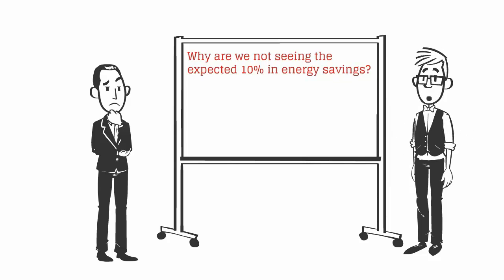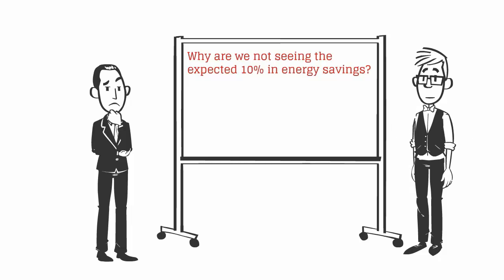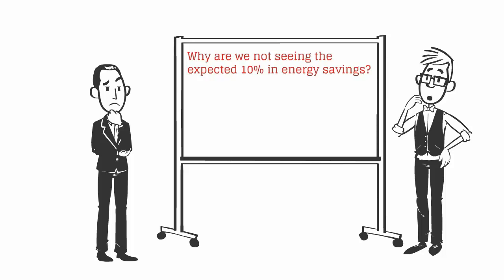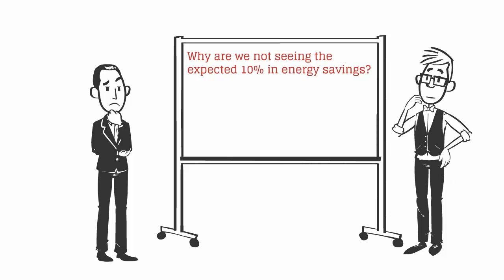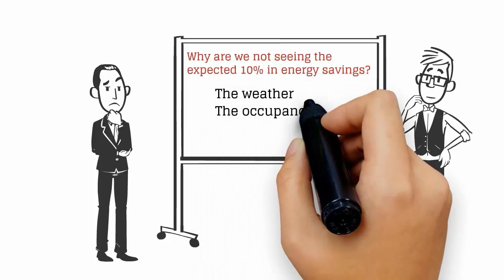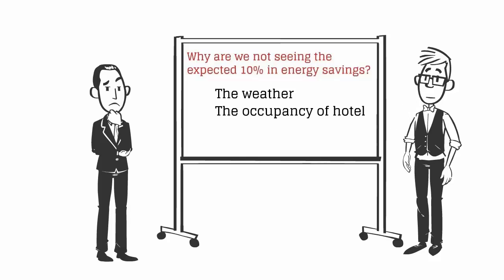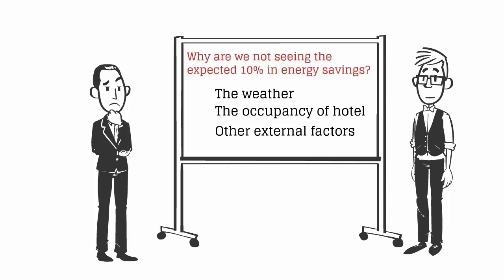With 101 things to do each day, John does not have the time to look deeper into his energy analysis. There are several things that could affect how much energy John's hotel was using over the course of the year. The weather was very different this year compared to last year. The occupancy of the hotel is also different this year compared to last year. Just looking at your utility bills does not take into account these external factors.